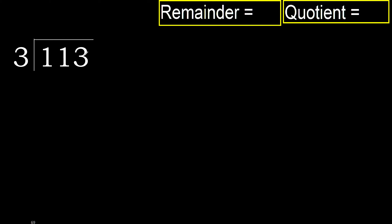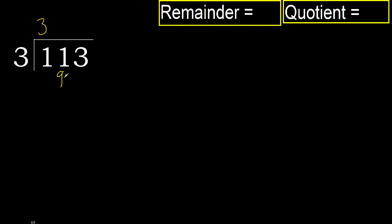113 divided by 3. 1 is less, therefore next. 11 is not less, therefore we work with 11. 3 multiplied by which number is nearest to 11 but not greater? 3 multiplied by 4 is 12, which is greater. Multiply by 3: that gives 9. 9 is not greater, ok. 11 minus 9 equals 2.